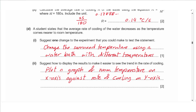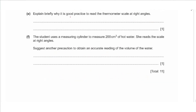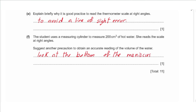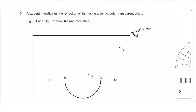Part e: explain why it is good practice to read the thermometer scale at right angles. We say to avoid a line-of-sight error, or parallax error. Part f: the student uses a measuring cylinder to measure 200 cm³ of hot water. Suggest another precaution for an accurate volume reading: read at the bottom of the meniscus, since most liquids curve downward.